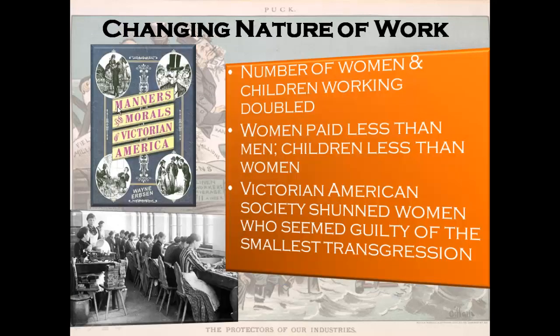Child labor continued to be a problem. The number of women and children working doubled from 1870 to 1920. Women were paid less than men and children less than women. Large numbers of women went to work in factories, but there was also a shift toward secretarial work and typewriting pools, considered less dirty than textile or garment factory work. Unfortunately, a side effect was that some women were forced into prostitution, and others used their feminine wiles to get ahead in a society that offered few other options.